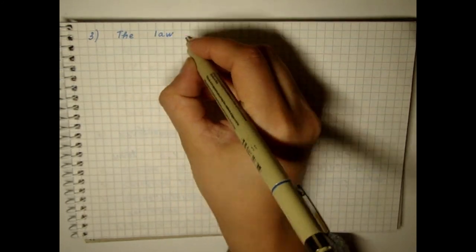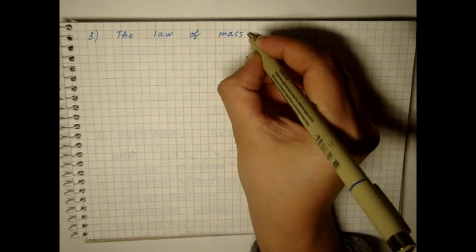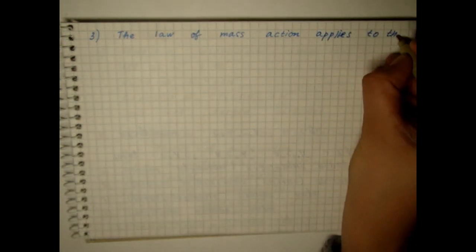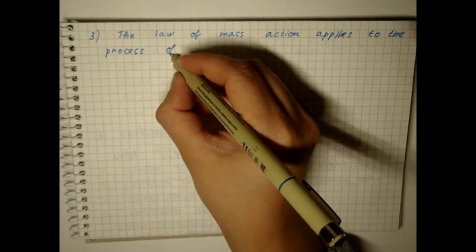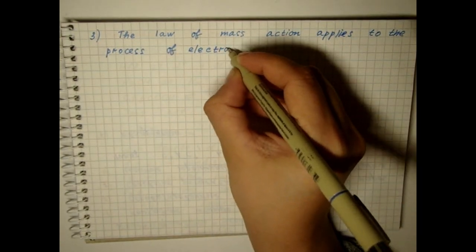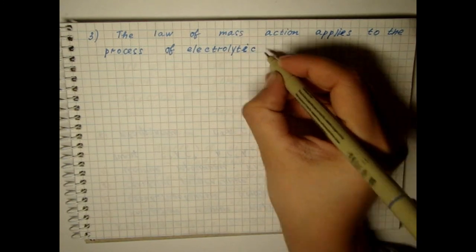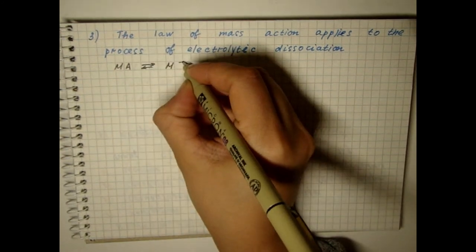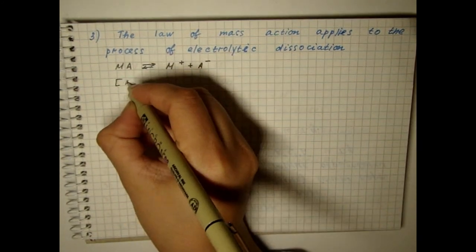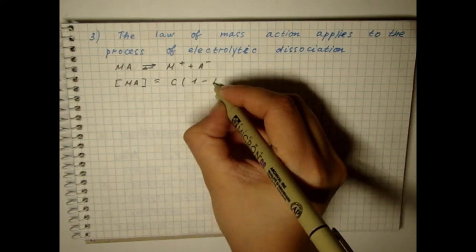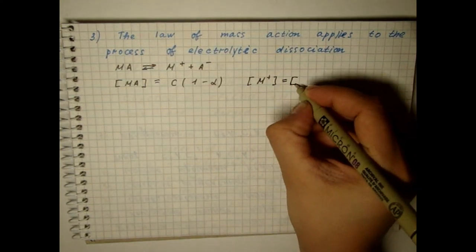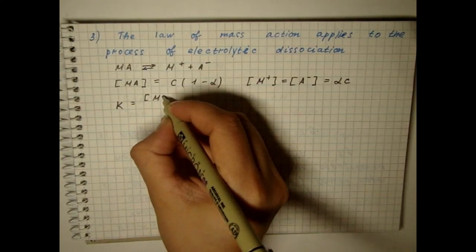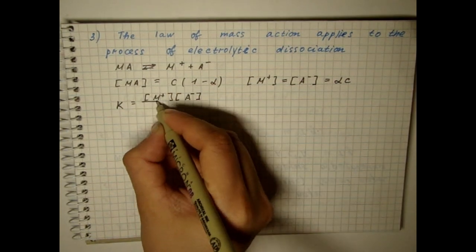The law of mass action applies to the process of electrolytic dissociation. Thus, if as a result of dissociation of electrolyte molecules one cation and one anion are obtained, then... And for the constant of electrolytic dissociation, according to Arrhenius theory, we get the following expression.